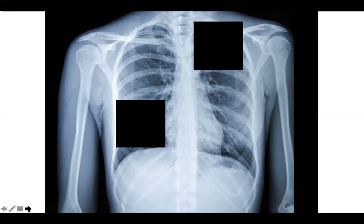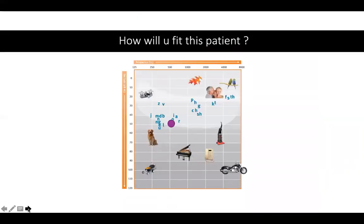Let me give you another example. Let's say I give you this audiogram and I'm only going to give you the hearing level at 500 hertz, and I'm going to say that your patient has a 50 dB hearing level. How would you fit this patient? As an audiologist, you're going to tell me that's not enough information — I don't know the audiogram configuration, the level at high frequency, low frequency, or middle frequency. So this is not enough information to fit this patient.